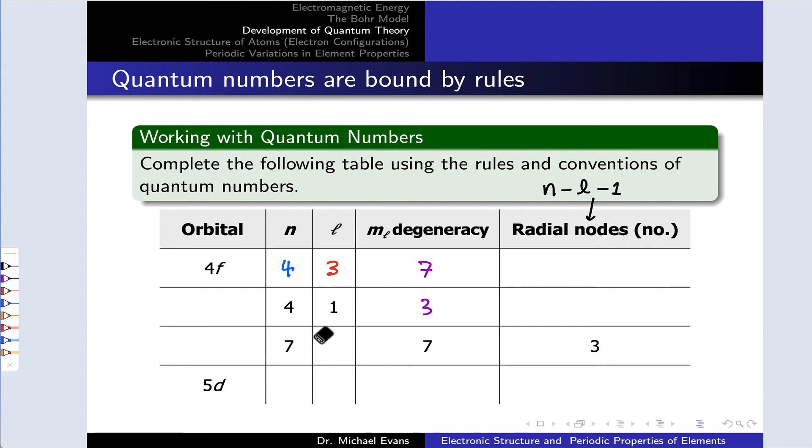Now for the second case, I've got n equals 4 and L equals 1. And knowing L equals 1, the possible values of m sub L are negative 1, 0, and positive 1. m sub L degeneracy is 3. And this we would call a 4p orbital, and we'll fill that in here shortly.